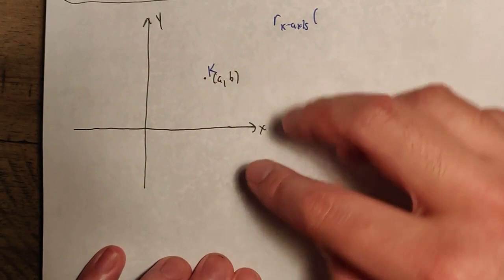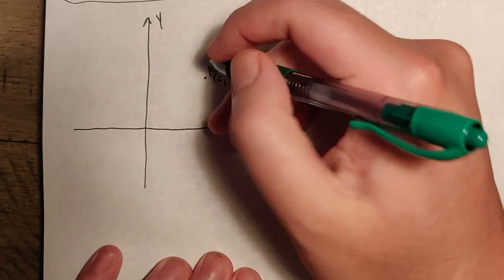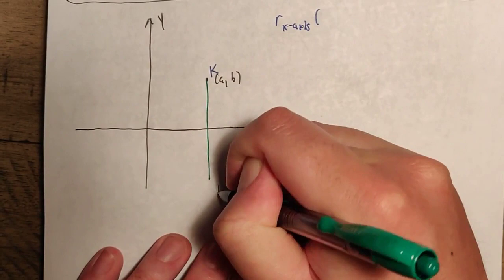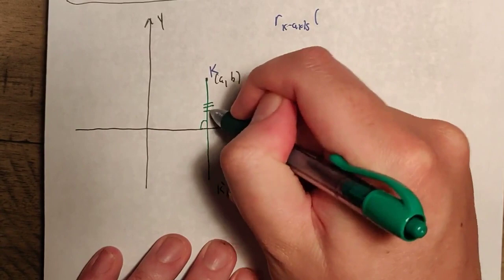According to our definition, K prime is going to be in a position such that the x-axis, which is our mirror, is the perpendicular bisector of K to K prime. Note that the x-axis is a horizontal line, so we're going to create a vertical line. If it's a vertical line, the x-coordinate doesn't change, so we know the x-coordinate is going to be A.